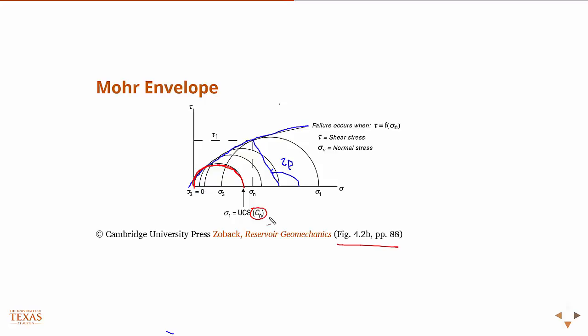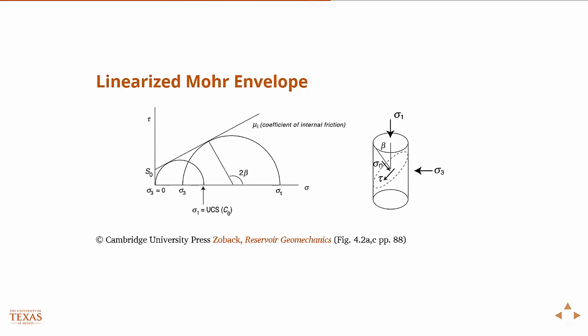This is the real Mohr envelope. If we go to the lab, we do a series of these tests. If we take a linearized approximation, the real envelope is basically drawing a line that connects the tangent points of those curves. But the real envelope is a parabola or something more complicated, and we like simple models as engineers.